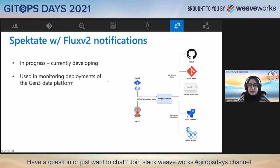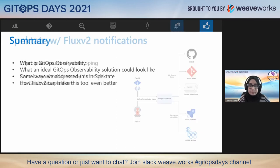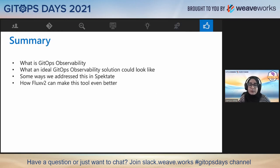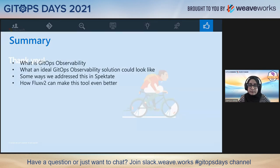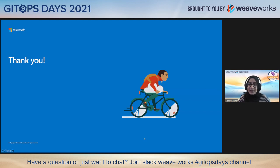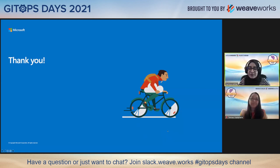We're currently still in the process of enriching the notifications from Flux V2 in Spectate, and we applied some of these tools in the Gen3 project as well. Here's a summary of what we talked about: we learned about GitOps observability, what we're focusing on, what an ideal solution could look like, how we address this in Spectate, and how Flux V2 could improve these even further. Thank you so much for joining today — happy to take any questions in Slack after.